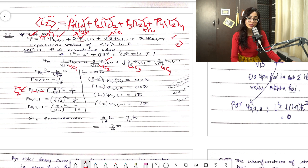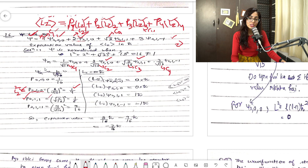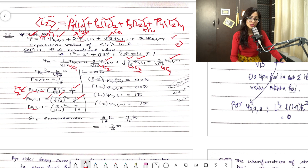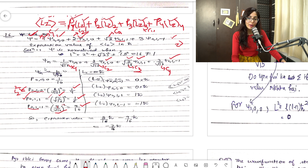For the third state ψ₂₁₁, p₂₁₁ = |c3|² = (√2/√16)² = 2/16 = 1/8. For the fourth state ψ₂₁₋₁, p₂₁₋₁ = |c4|² = (3/√16)² = 9/16. So we have all four probabilities: 1/16, 4/16, 2/16, and 9/16.